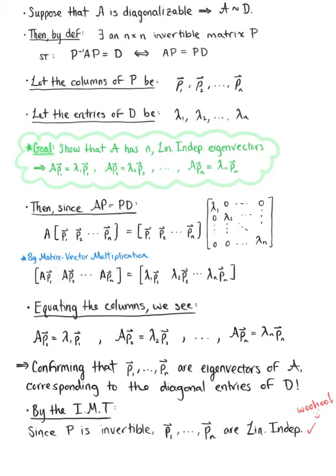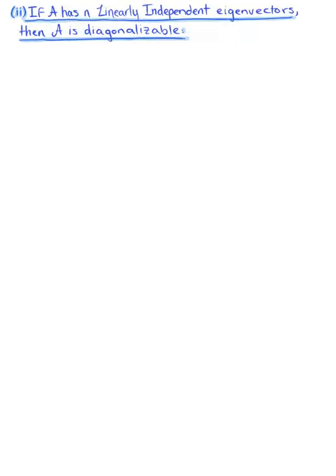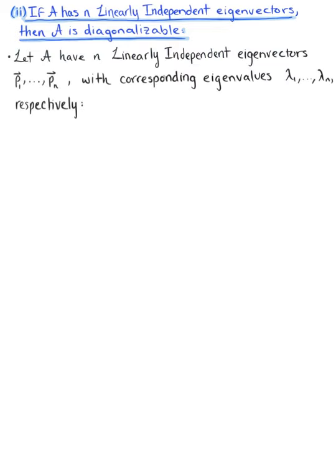So we can officially conclude that matrix A has n linearly independent eigenvectors, which completes the proof of case 1. In case 2, we want to show that if matrix A has n linearly independent eigenvectors, then matrix A is diagonalizable. So here we're going to let A have n linearly independent eigenvectors with corresponding eigenvalues, respectively. So we have n eigenvalue problems.